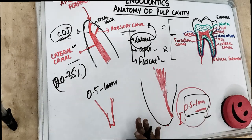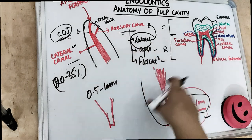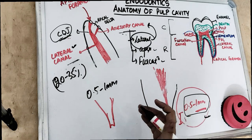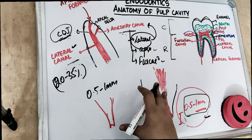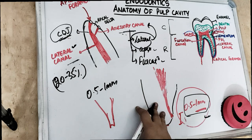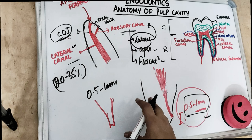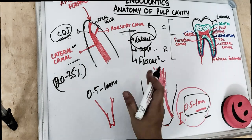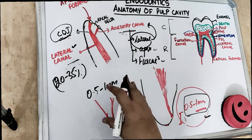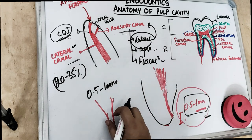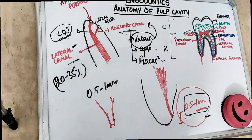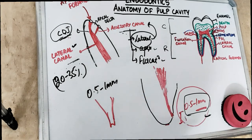That is about the anatomy of the pulp cavity. In the next video, we are going to cover all the classifications — the Vertucci classification, the Weine classification — and we will also study the isthmus and its classifications in the second part of the anatomy of the pulp cavity. I hope you enjoyed today's video and learned something. Don't forget to connect with me, and if you have any questions, leave them in the comments below. Like, share, subscribe, and I'll see you soon.